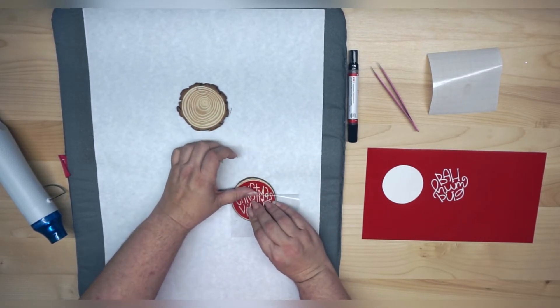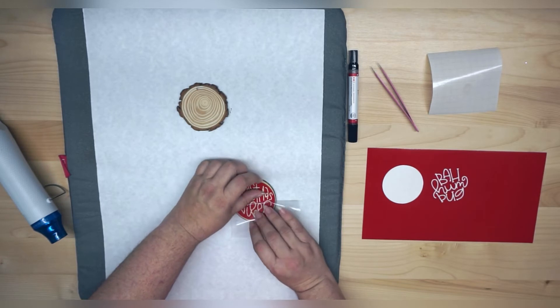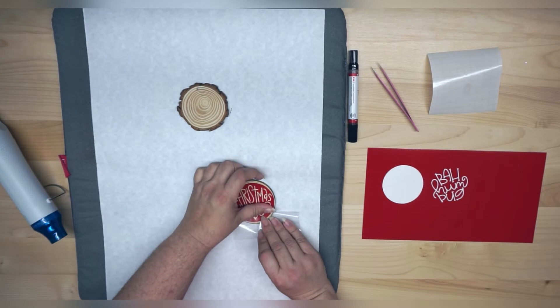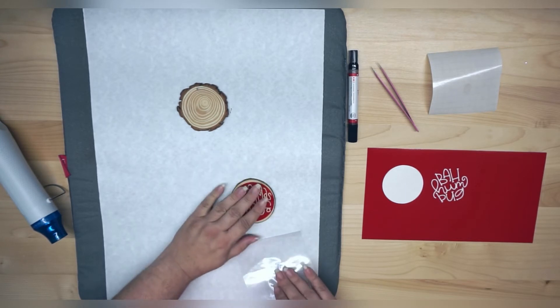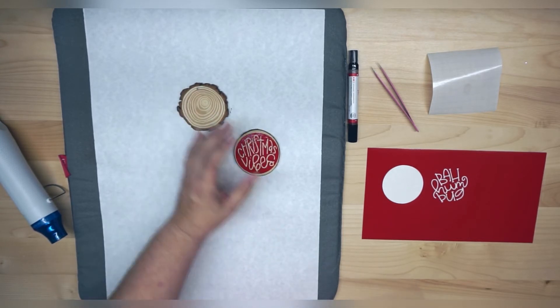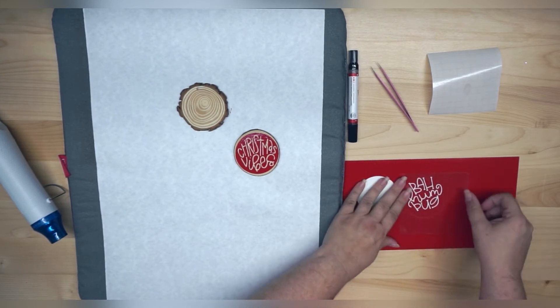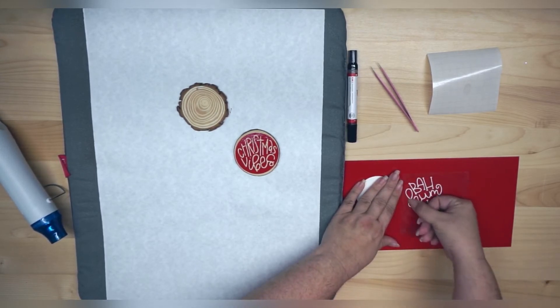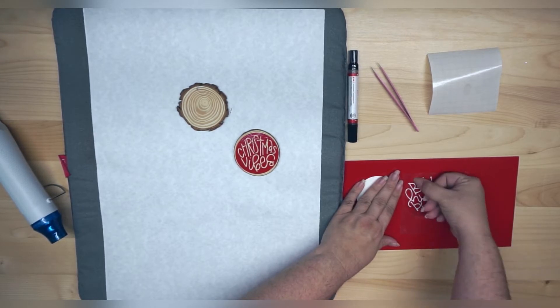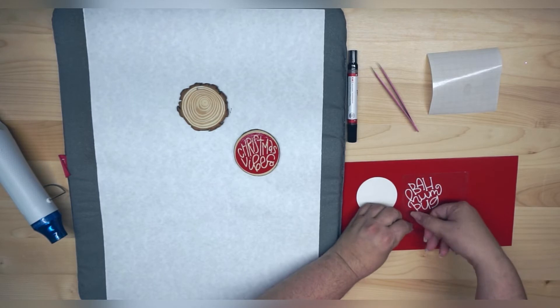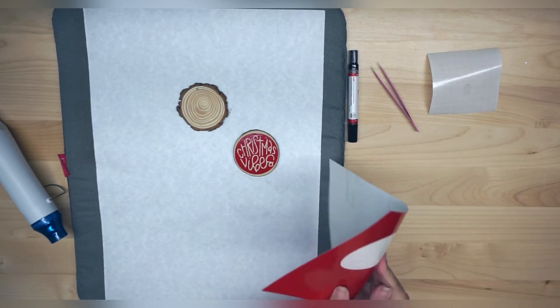But if you have more of a medium-tack transfer tape, then that works really good. And a lot of people ask, how do I know if it's medium-tack or if it's high-tack? Well, it's either really sticky, or it's just kind of sticky. So you can always write in to wherever you purchase your vinyl from, and usually they can tell you if their transfer tape is considered a medium-tack or a high-tack.